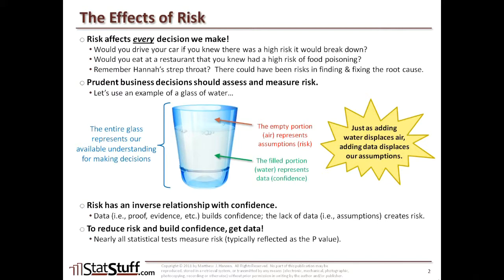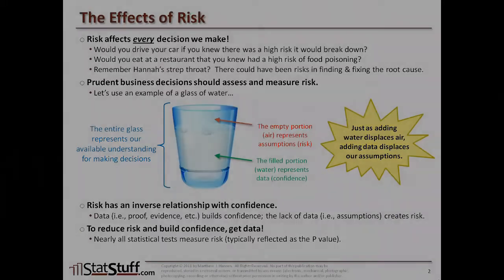Nearly all the statistical tests we run are going to measure risk to some level or another. Typically, the way the tests run, that risk is measured by what's called a p-value. So that's what we look for when we run statistical tests — the p-value, which is a measurement of risk.